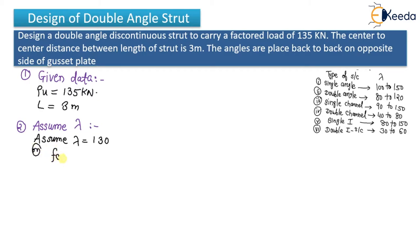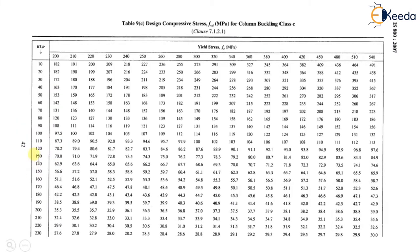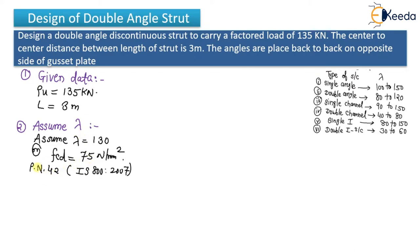In other words, you can use FCD ≈ 75 N/mm². I'm taking this from table 9C on page number 42 of IS 800:2007. For lambda = 130 with FY = 250 column, the approximate value is 74.3, so I'm assuming 75. It is just an approximate value because we are still in the section-trial stage.